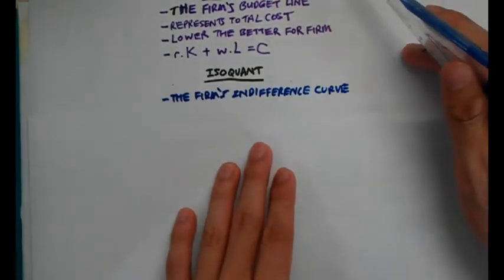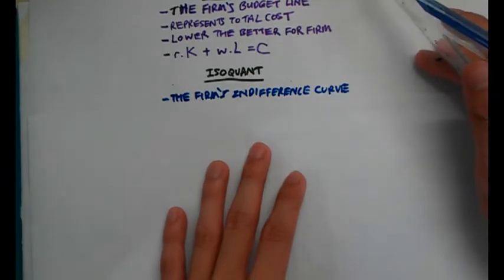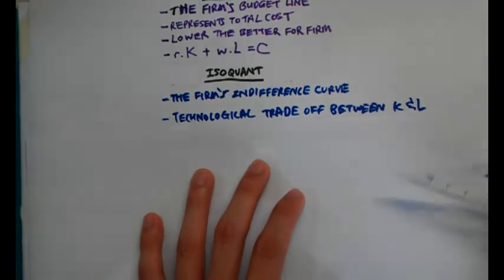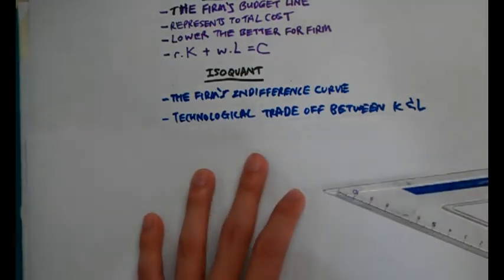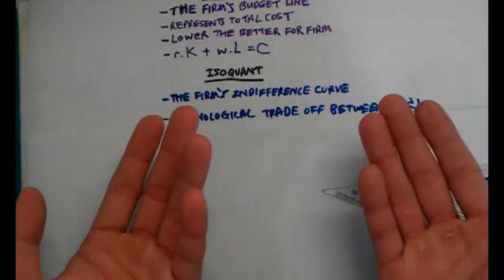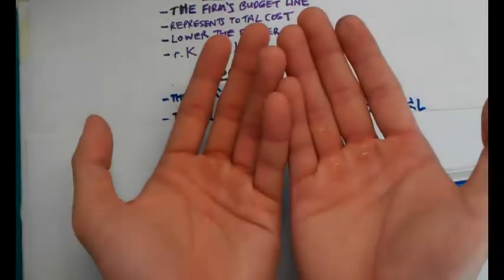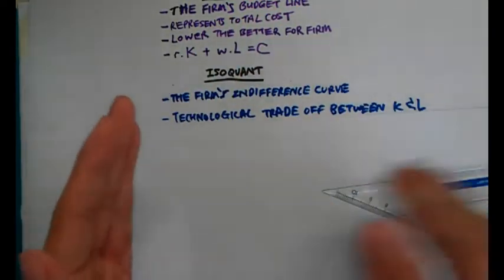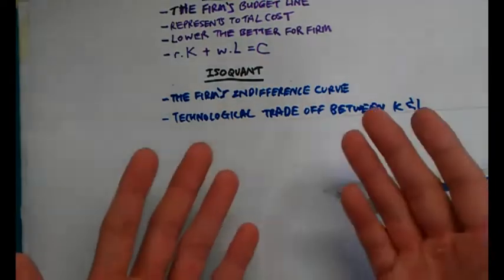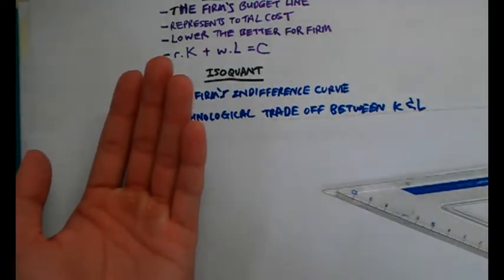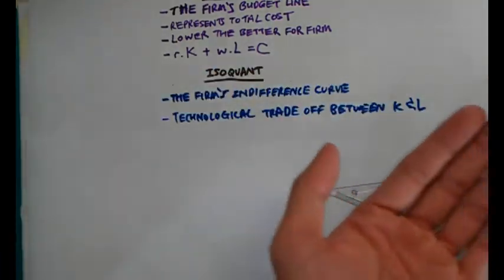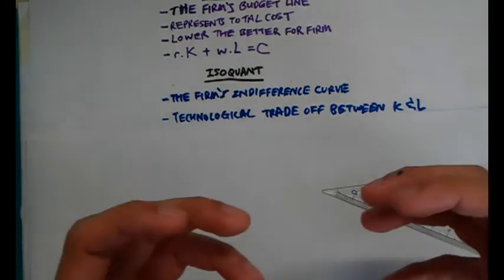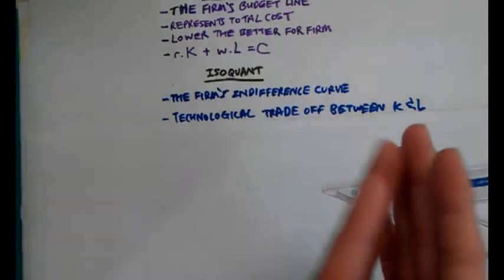Moving on to the Isoquant — the Isoquant is the firm's indifference curve, and it represents the technological trade-off between capital and labour. Similar to a consumer where this amount of X and this amount of Y may make the consumer as satisfied as another bundle along the same indifference curve, the same applies to the firm: this amount of capital and labour, compared to another bundle along the same Isoquant, means the firm is still able to create the same quantity of output using a different mix.